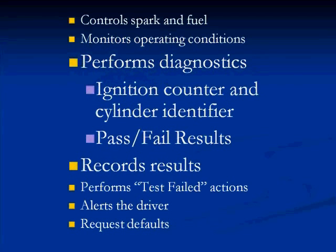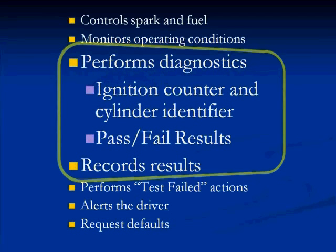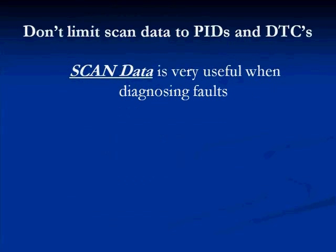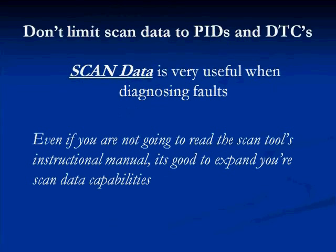When we look at these, we want to highlight that performing diagnostics, using the ignition counter and cylinder identifier, getting pass or fail results, and recording the results are some of the most important things we need to address when doing drivability. Don't limit the scan data to just PIDs and diagnostic trouble codes — scan data is very useful when diagnosing faults, and it's a good idea to expand your scan data capabilities.